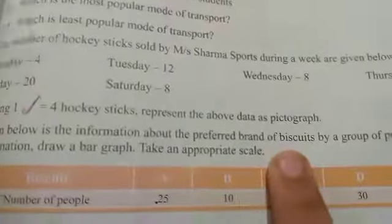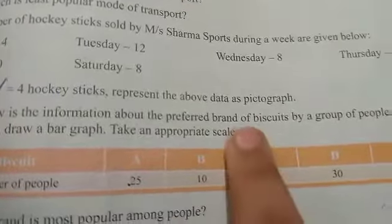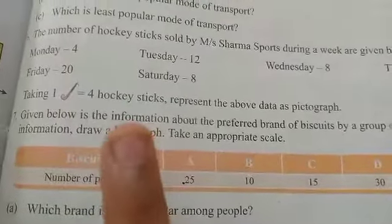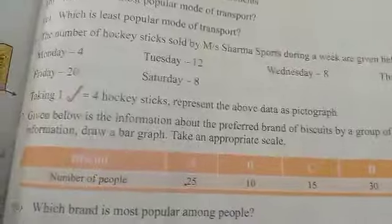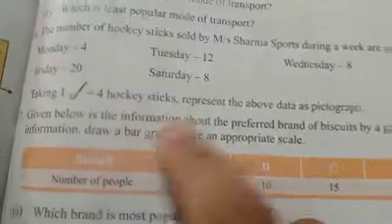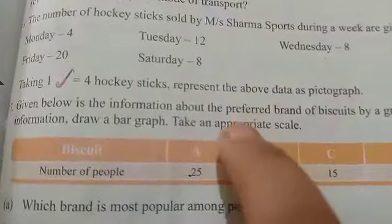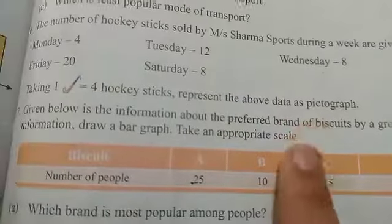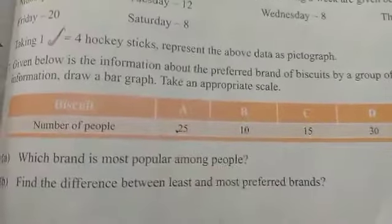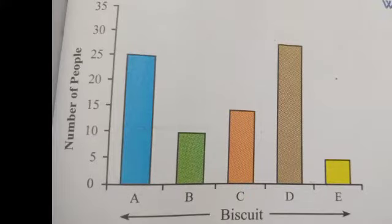This is my 7th question. There is information about the preferred brand which most people eat — brand biscuits. There is a group of people and according to their information we have made a bar graph with an appropriate scale, and we will answer the questions.